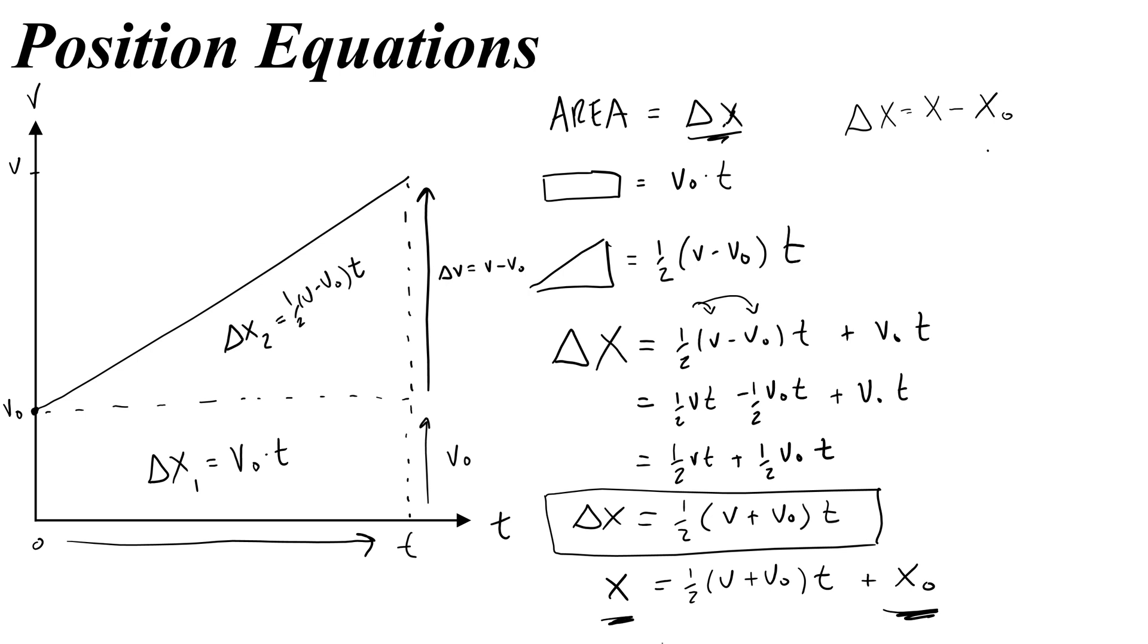Okay, there is another equation that we can actually get if we go back. If we actually leave the one-half v minus v naught times t, or change it into delta v. So v minus v naught, let's just make that delta v.